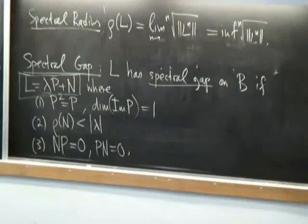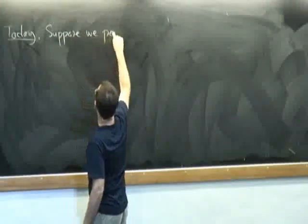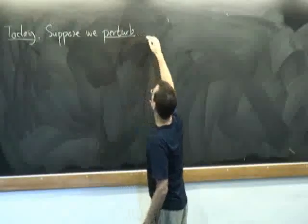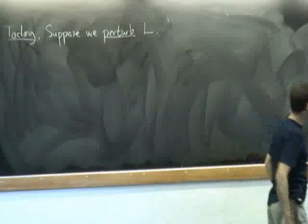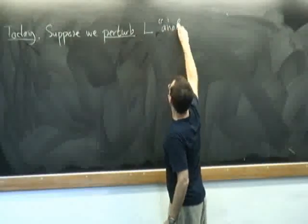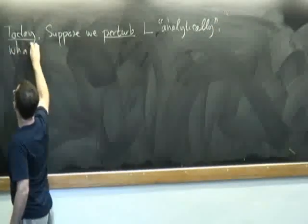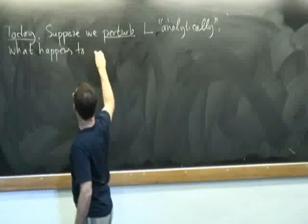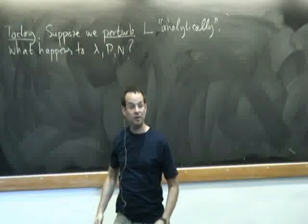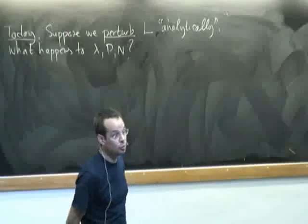What we're going to do today is we're going to continue to investigate this property of spectral gaps and we're going to ask the following question. Suppose we perturb L in an analytic way — we will ask what happens to lambda, P, and N. Is it in fact true that the perturbed operator will continue to have spectral gap?